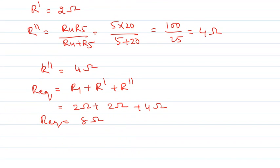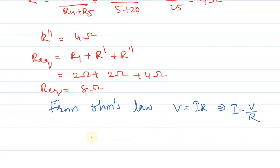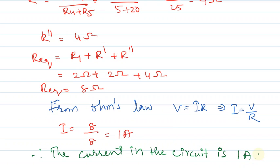Now we need to find the current using Ohm's Law. From Ohm's Law, V is equals to IR, which implies I is equals to V upon R. Substituting the values, I is equals to 8 upon 8, this is equals to 1 ampere. Therefore, the current in the circuit is 1 ampere. I hope you have understood the explanation, thank you.